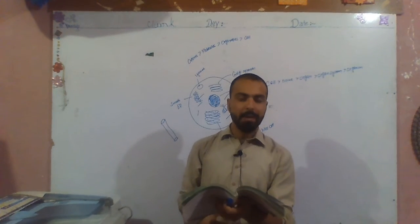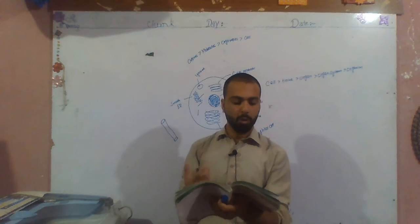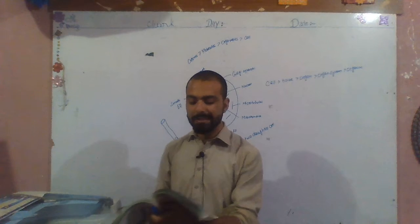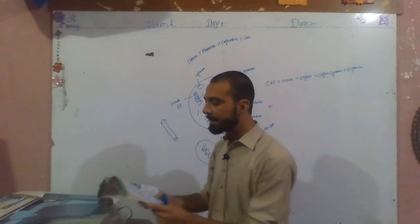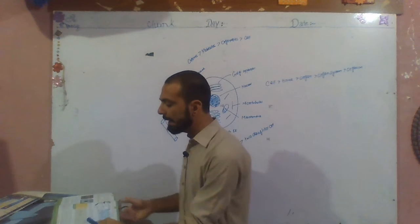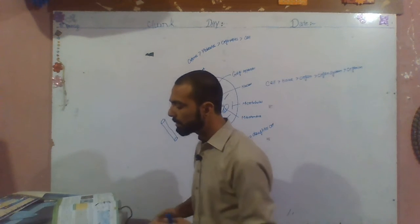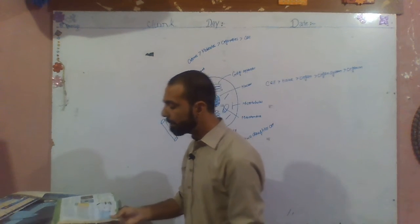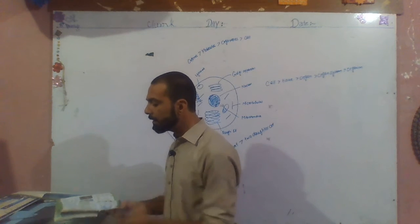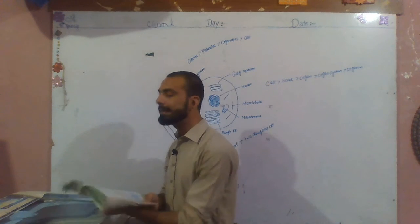The topic is light microscope. A light microscope uses light to make the image of an object. Light passes through the sample and then through the glass lenses.